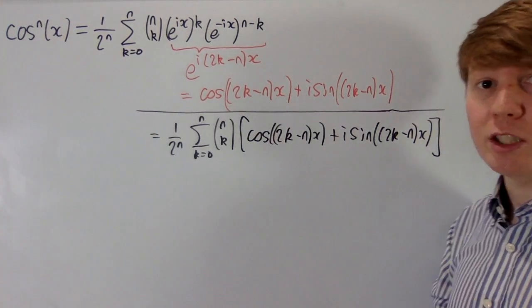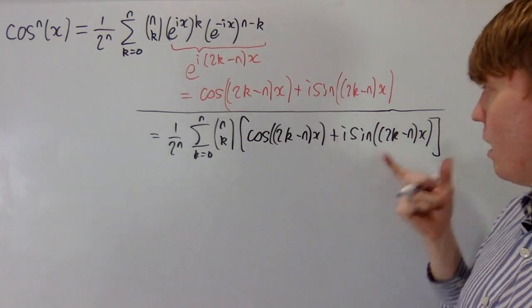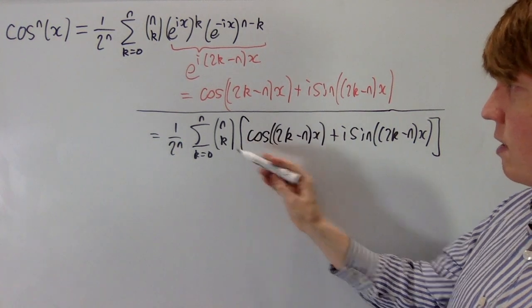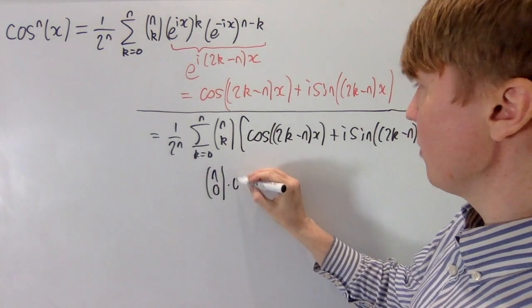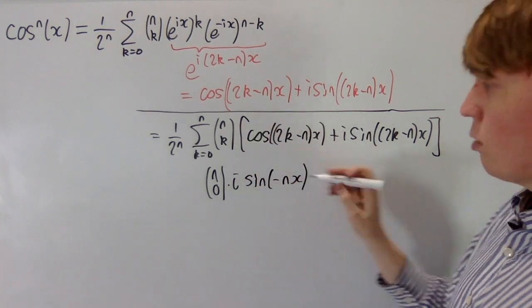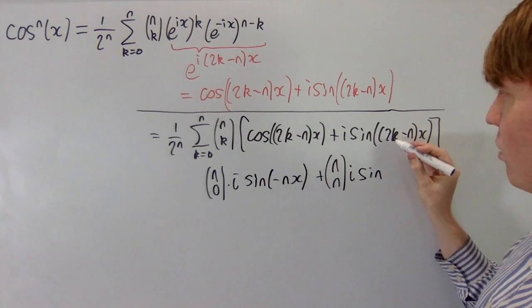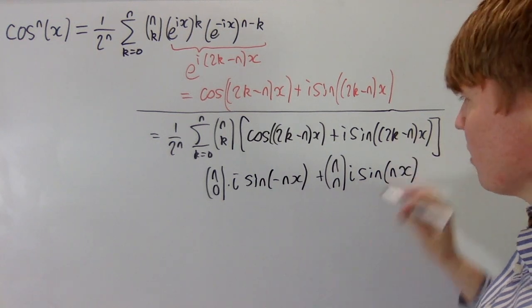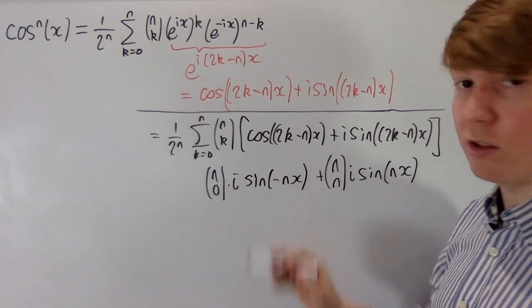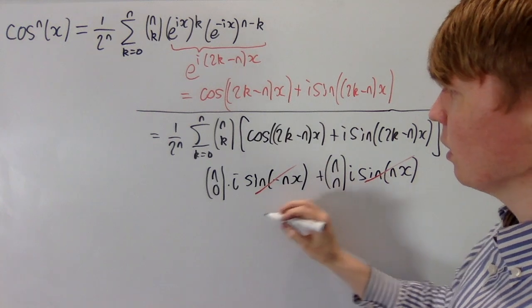This seems problematic — we've gained imaginary terms — but since cos^n(x) is definitely a real function, the imaginary parts ought to cancel. For example, when k=0 we get C(n,0)·i·sin(−nx), and when k=n we get C(n,n)·i·sin(nx). Since C(n,0) = C(n,n), one is the negative of the other, so they cancel.